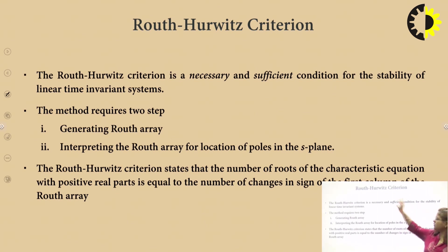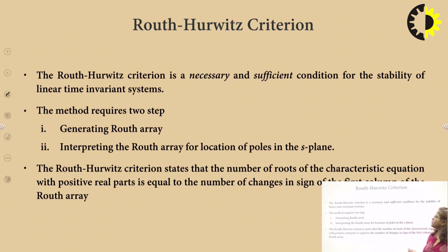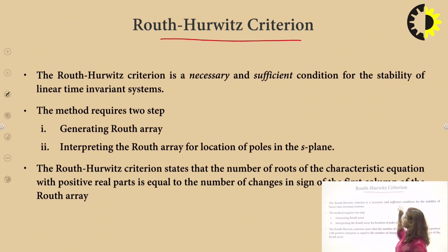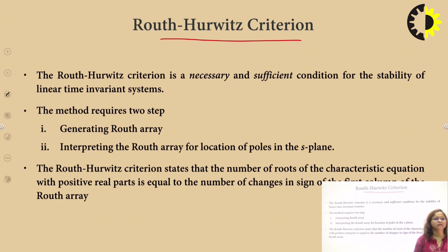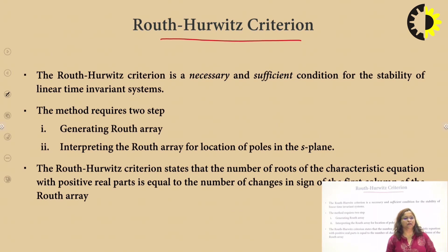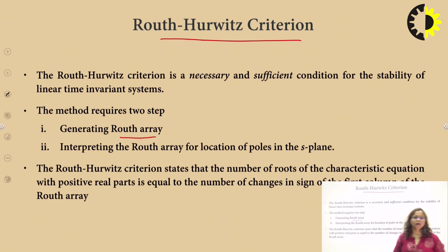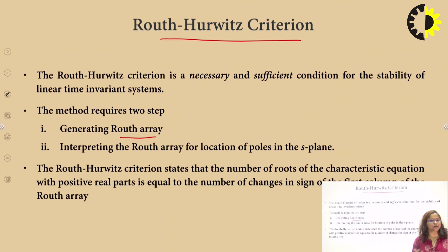Now we can formulate all these rules, which are collectively called the Routh-Hurwitz criteria. The Routh-Hurwitz criteria gives a necessary and sufficient condition to determine the stability of an LTI system. It requires two steps: generating a Routh array, and interpreting the Routh array for the location of poles in the s-plane to determine the stability of the system.